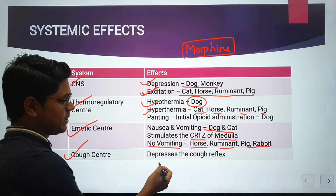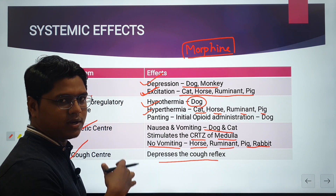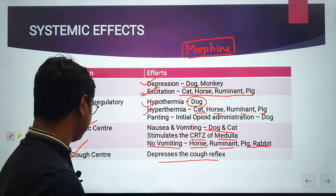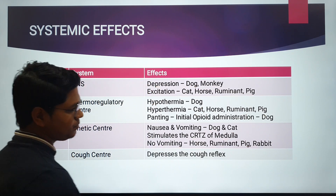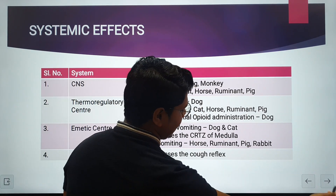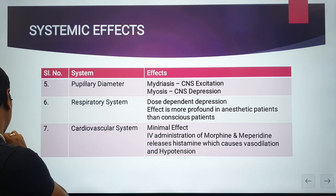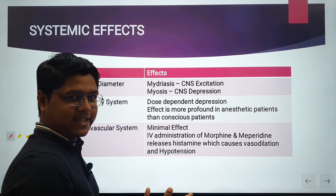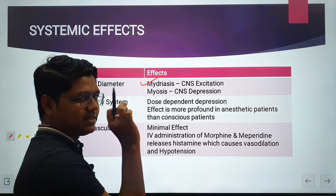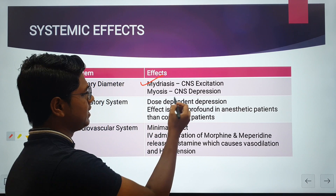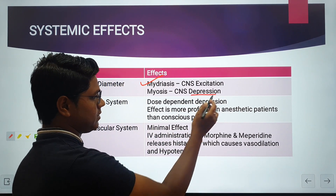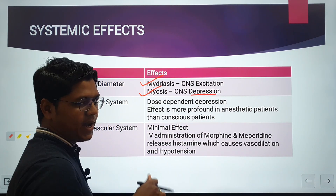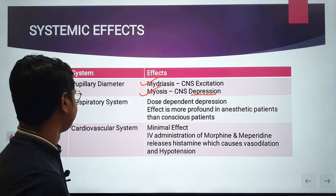Regarding the emetic center: opioids cause nausea and vomiting in dogs and cats by stimulating the chemoreceptor trigger zone (CTZ) present in the medulla. Vomiting is not typically found in horse, ruminant, pig, and rabbit. Regarding the cough center: opioids depress the cough reflex, which is why you can intubate the animal and pass an endotracheal tube. Regarding pupillary diameter: species where opioids cause excitation show miosis (pupil constriction); species with CNS depression show mydriasis (pupil dilation).